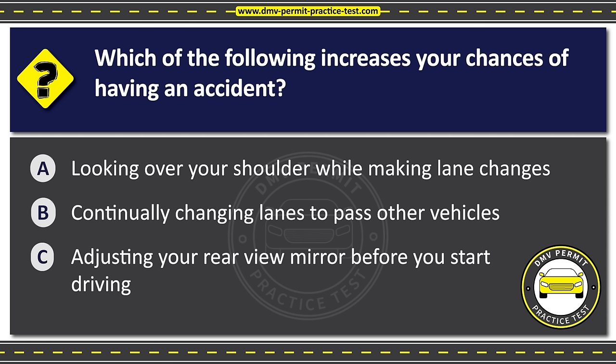Question twenty-eight. You are driving on a one-way street. You may turn left onto another one-way street. Option A: Only if a sign permits the turn. Option B: If traffic on the street is moving to the right. Option C: If traffic on the street is moving to the left. The correct answer is Option C: If traffic on the street is moving to the left.